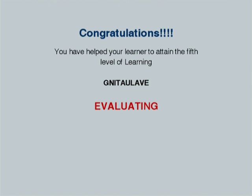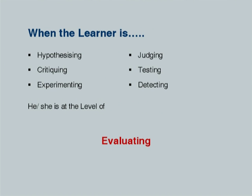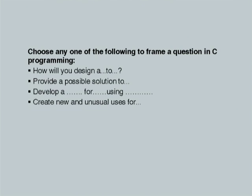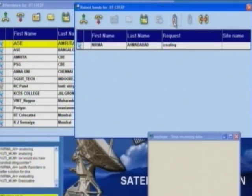These are the typical action verbs for taking your learners to the evaluating level: hypothesizing, critiquing, experimenting, judging, testing, detecting. One last level — let's see where you go from here. Your time starts now. Remember, this is the highest order, so you will have to be very careful in the kind of questions you will be framing.